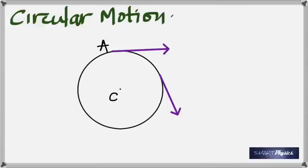This acceleration is different from what we're used to — here it's a change in direction, not magnitude. It is a special type of acceleration whose direction is always at right angles to the velocity. Since the velocity is along the tangent, the acceleration must be along the radius, because the radius is perpendicular to the tangent at any point.